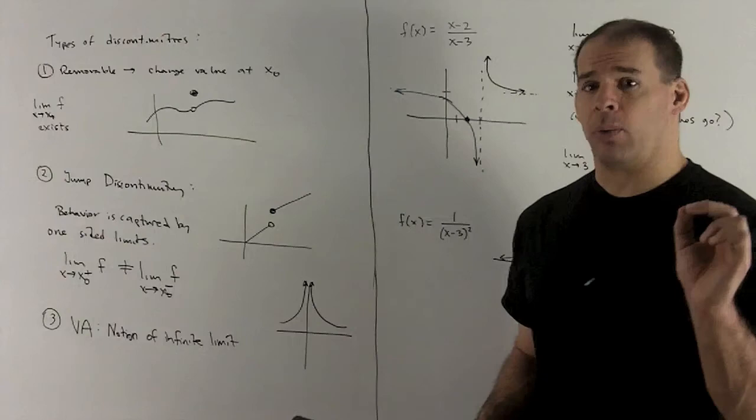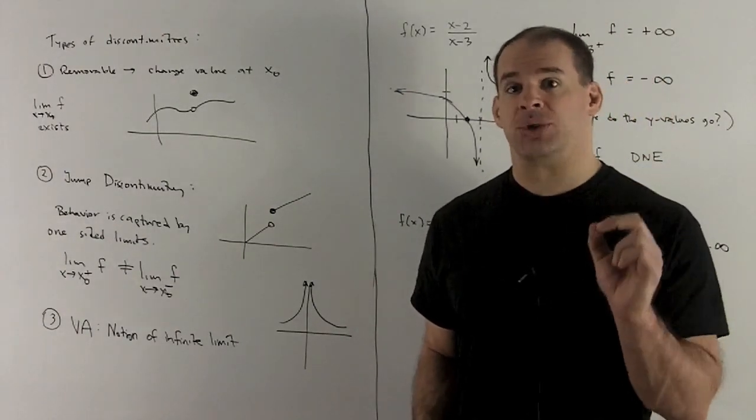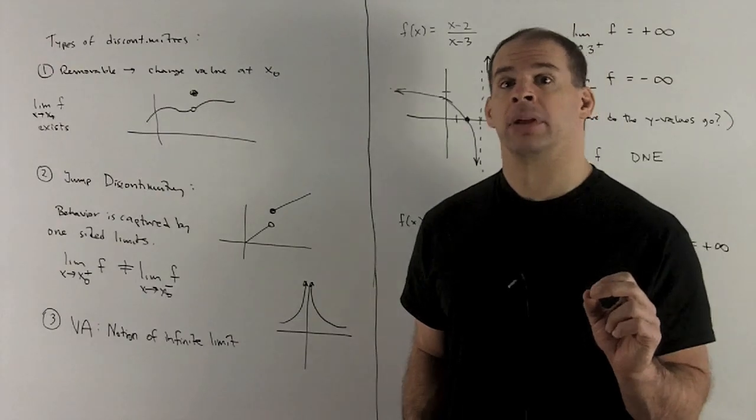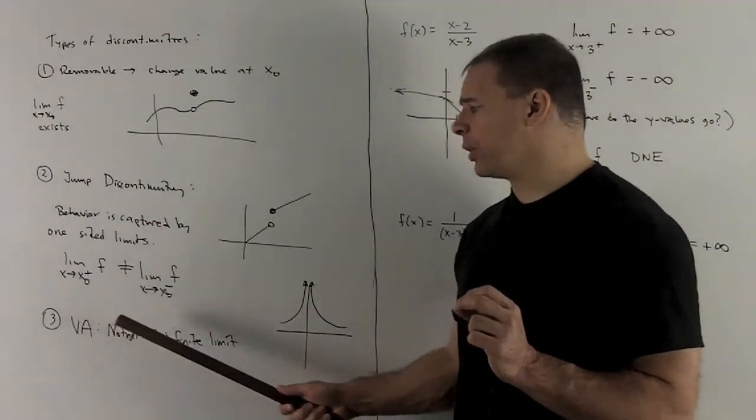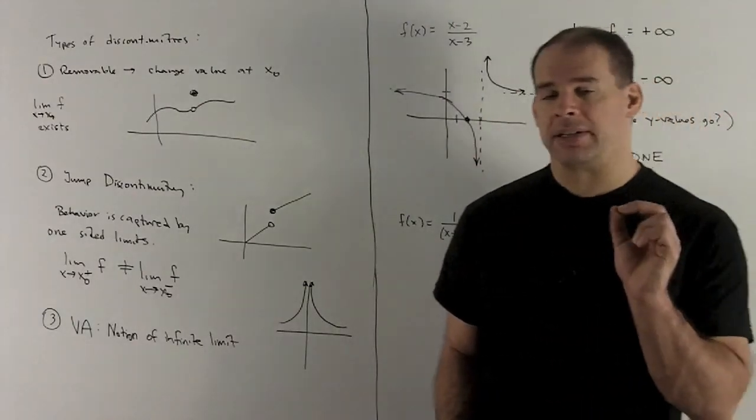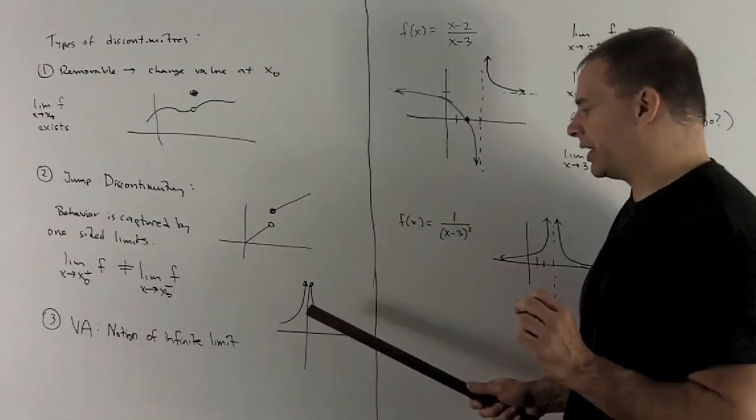And you notice, you stay to one side, the limits are just fine, it's just that you can't get a two-sided limit. So we go to a third case, where we have these vertical asymptotes, so to get a handle on this, we're going to want to have a notion of an infinite limit.